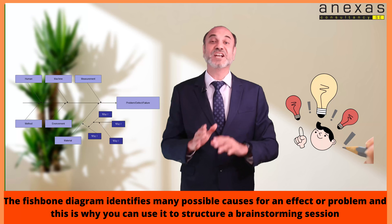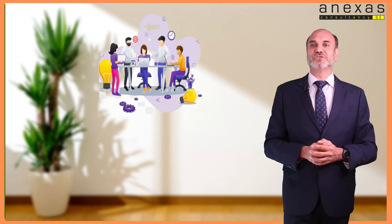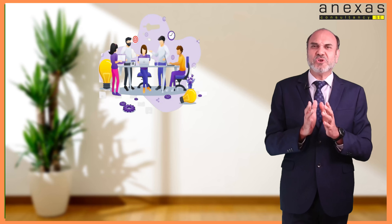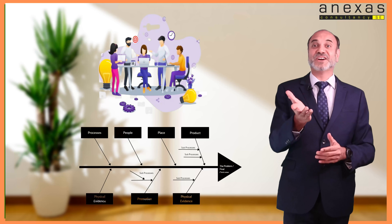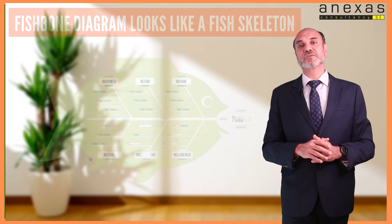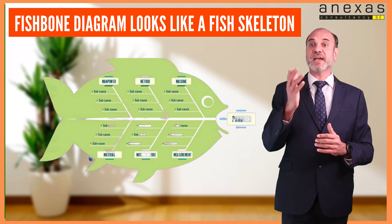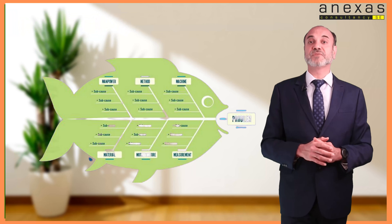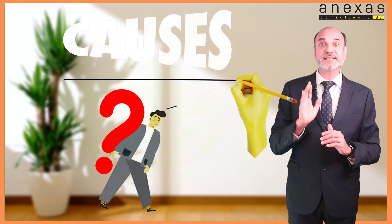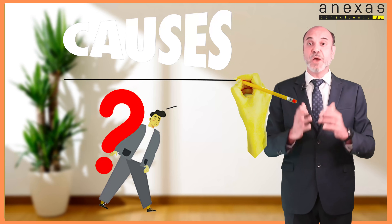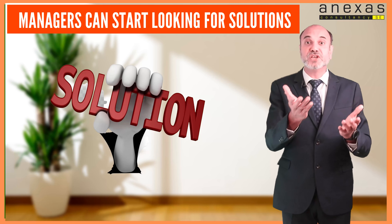The fishbone diagram identifies many possible causes for an effect or problem, which is why you can use it to structure a brainstorming session when a team's thinking tends to fall into a rut and you feel there is no way out. Most of the time we tend to blame people for any problem — the fishbone diagram prevents us from falling into this trap. The diagram looks just like a fish skeleton, with the problem at its head and the causes feeding into the spine.